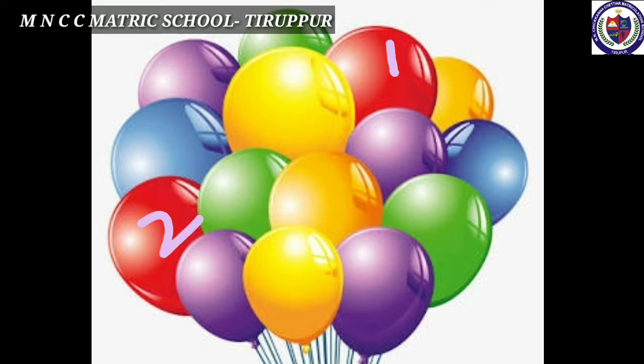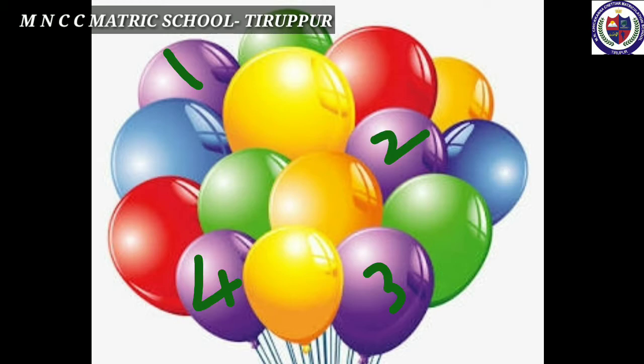Then, let's count the red color balloons. One, two. Two red balloons. Then, how many violet balloons are there? One, two, three, four. Four violet balloons.